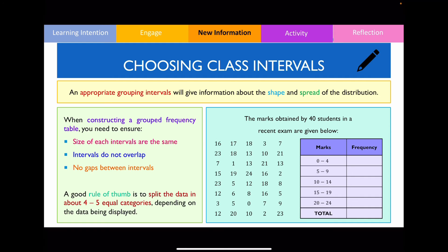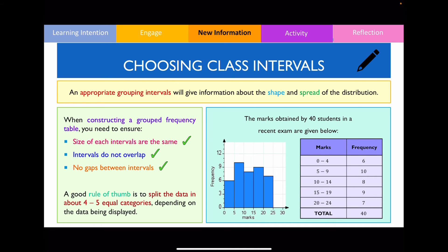In this correct example, the size of each class interval is the same — a range of 5 in each case. There are no overlapping intervals, and no gaps between intervals. Now that the grouping intervals are correctly chosen, I can complete the table by reporting all the frequencies and finding the total. Once that's done, we can draw a graph using this information, which is what we refer to as a histogram.